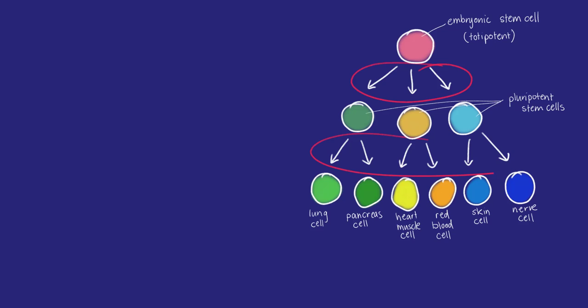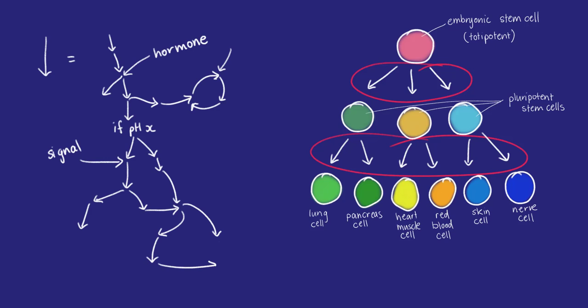Cell differentiation and growth is controlled by a complex communication system of hormones and enzymes that respond to changes in conditions.